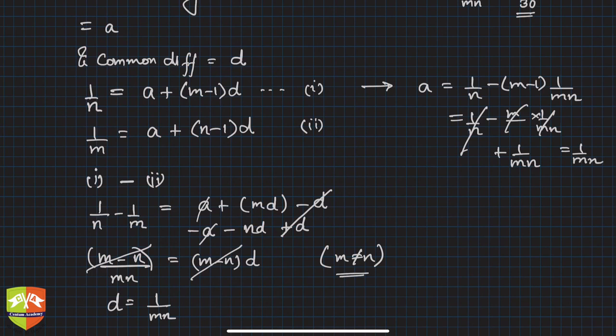Okay, so hence we had to find out t_mn. So what will be t_mn? t_mn is nothing but first term plus (mn-1)d. This is the result.